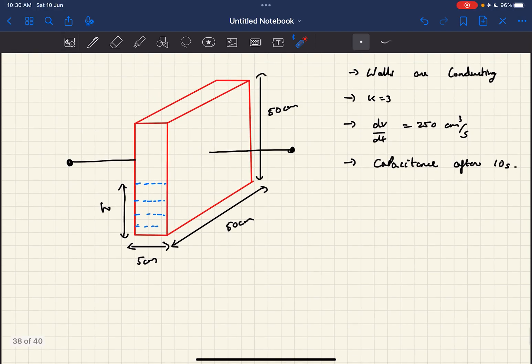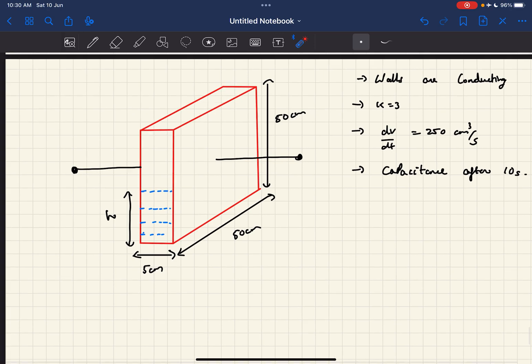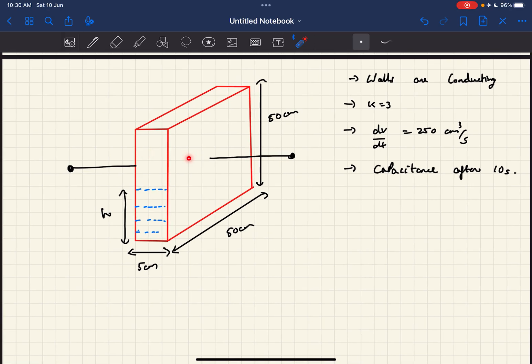In this problem, we've been given a container in which two parallel faces are conducting. A liquid of dielectric constant 3 is being filled at a constant rate of 250 cm³ per second. We need to find the capacitance after 10 seconds. It's also given that the capacitive effects of the other walls can be neglected.